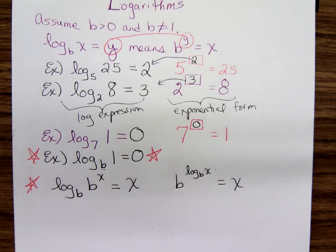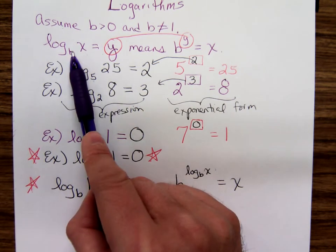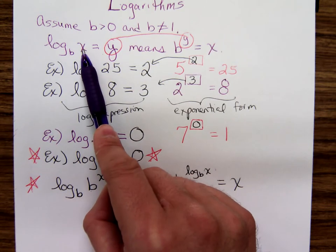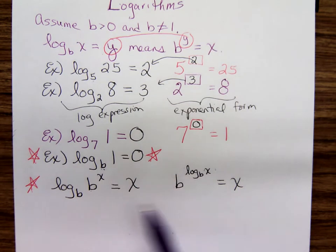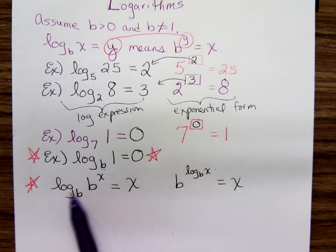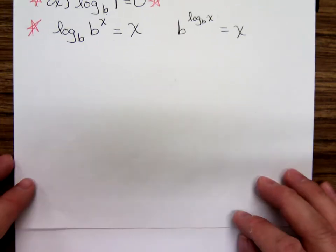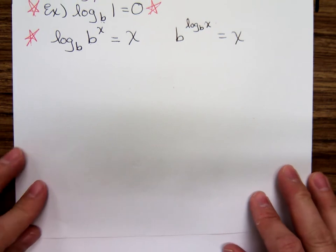This is Anthony Purcelli picking up after our break doing more logarithms with my college algebra class. We had already defined a logarithm to be the exponent that you put on the number b in order to get the number x. We did some examples and formally said that exponential functions and logarithmic functions are inverses of each other: f of g of x equals x, and g of f of x equals x. Now we're ready to state some properties of logarithms.